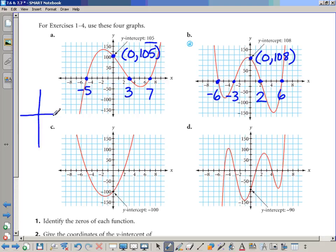A single root slices through the graph and does not change, or it never flattens out as it cuts through the x-axis. As it cuts through the x-axis, it doesn't flatten out. A double root bounces off the x-axis, sort of like a parabola. That's going to be a double root.